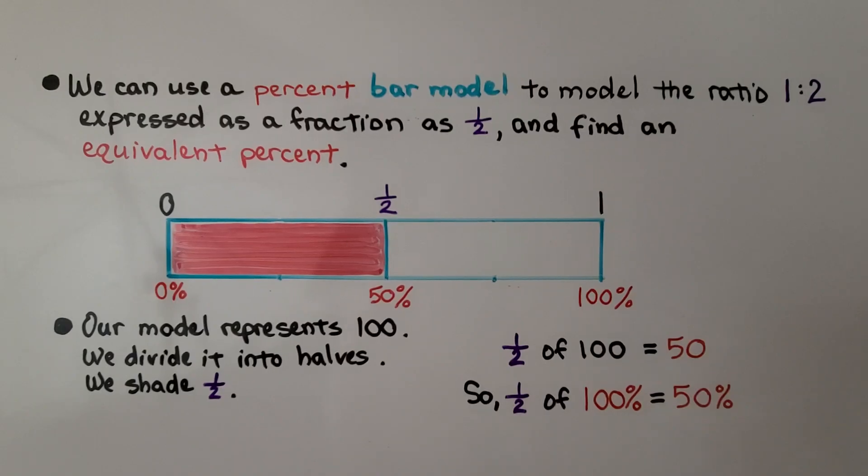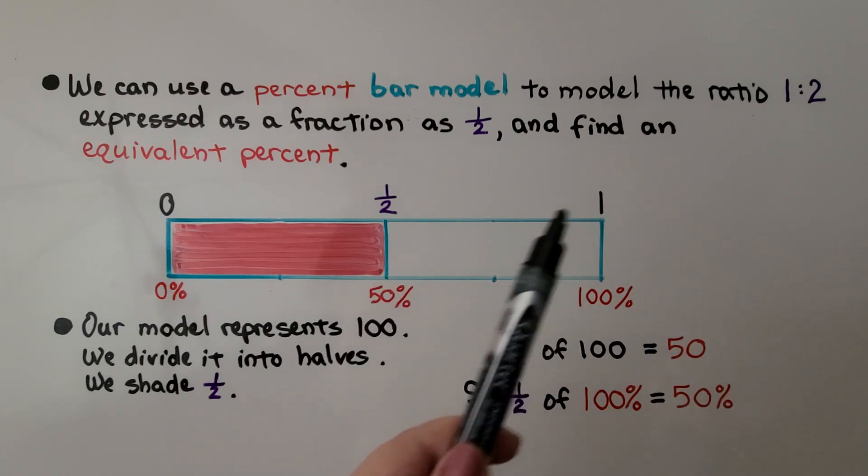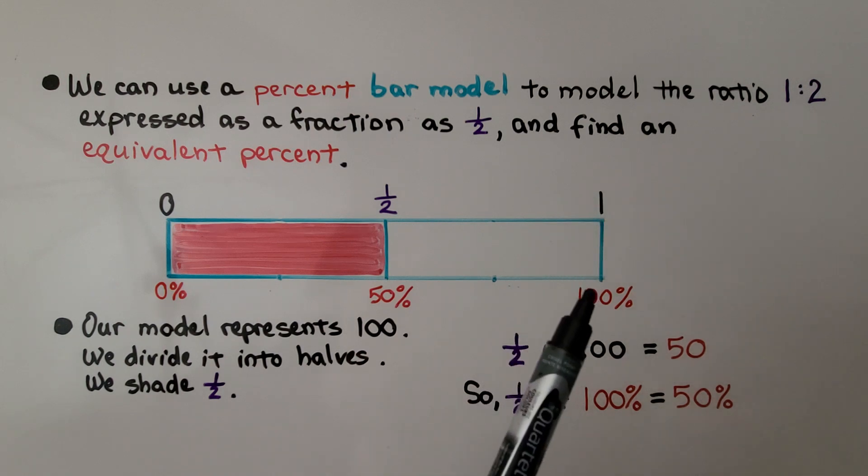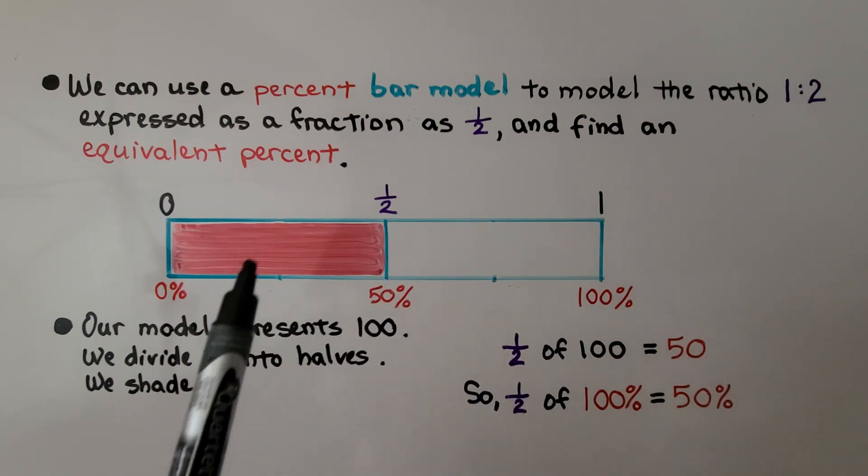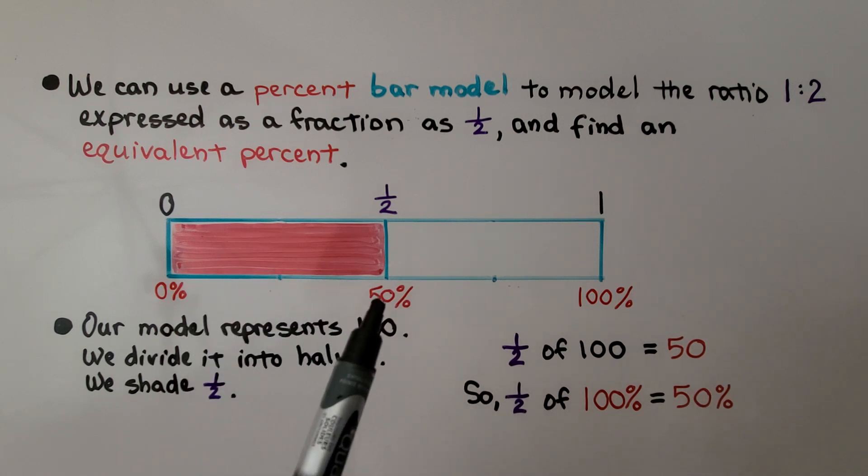We can use a percent bar model to model the ratio one to two, expressed as a fraction as one-half, and find an equivalent percent. Our model represents 100, or we can say it represents one if we're doing it as a fraction. We divide it into halves. We shade half of it. Half of 100 is equal to 50. So half of 100% is equal to 50%.